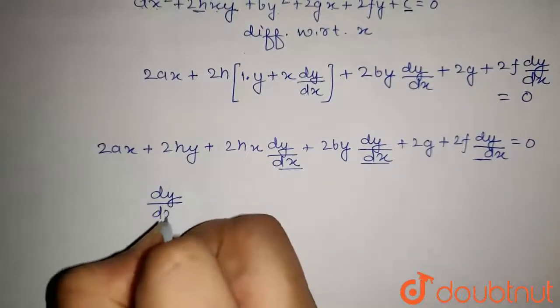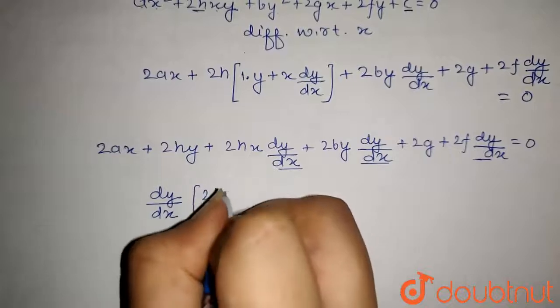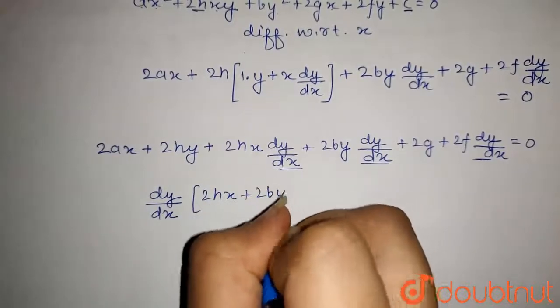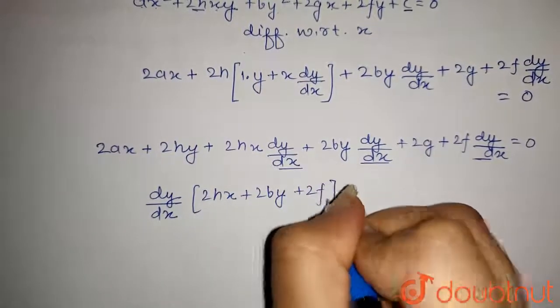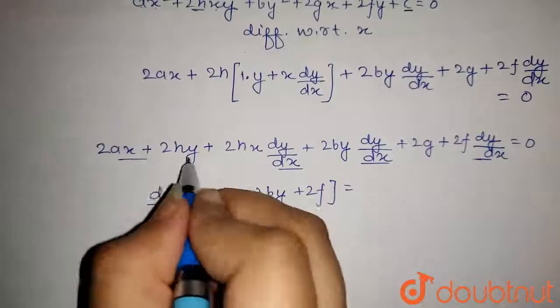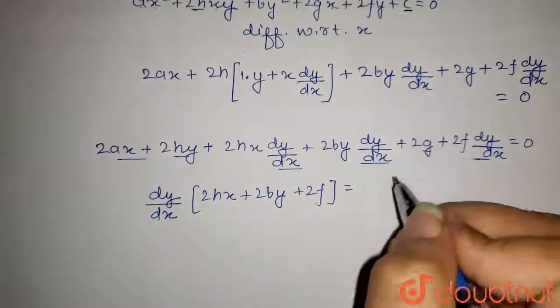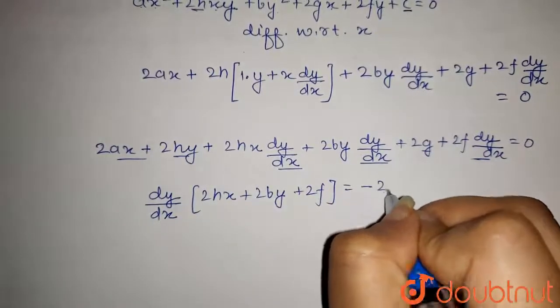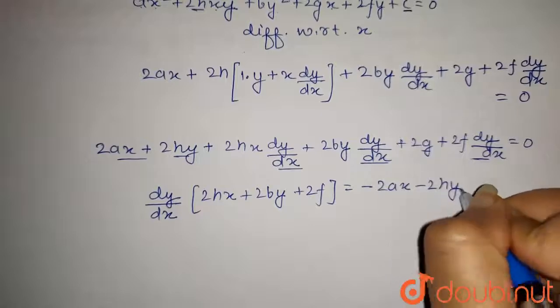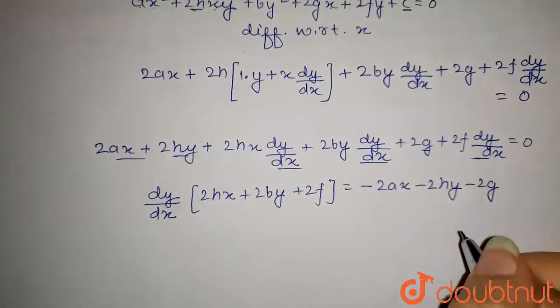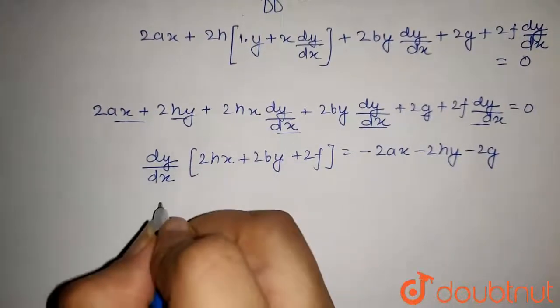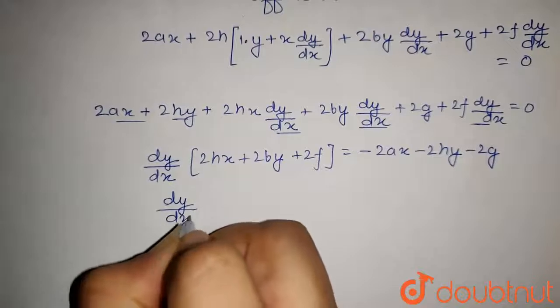we get dy by dx into 2hx plus 2by plus 2f is equal to, now transferring these other terms to the RHS, we get minus 2ax minus 2hy minus 2g. On again simplifying this, we get dy by dx is equal to